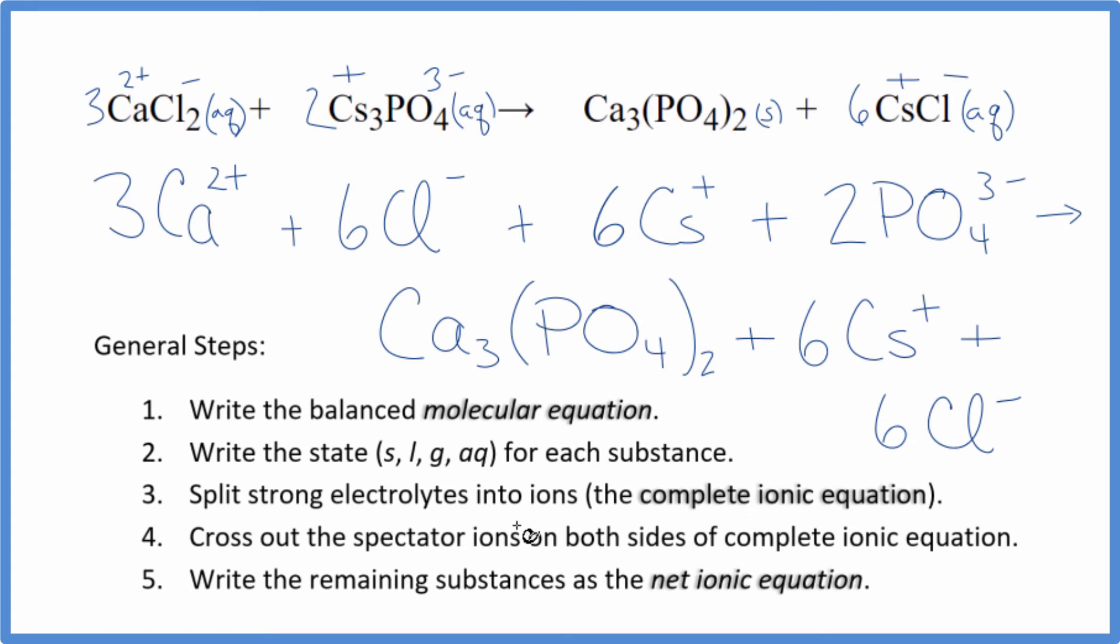These are our reactants. Now we can cross out the spectator ions that appear on both sides. So in the reactants, we have six chloride ions. We have that in the products. Cross it out.